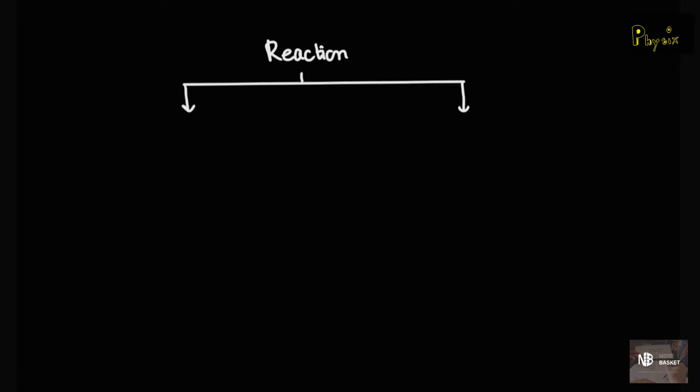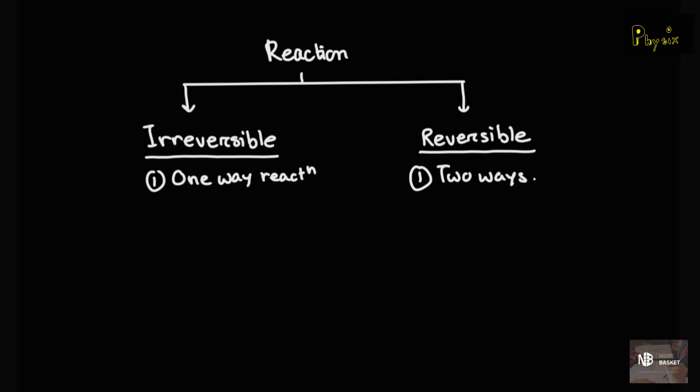We know reactions are of two types, which is one, irreversible reaction and two, reversible reaction. What are the differences between reversible and irreversible reaction? Well, an irreversible reaction is only a one-way reaction. And a reversible reaction, it is not one-way, but it has two ways. And by definition, reversible reactions are incomplete and irreversible reactions are complete. And the idea of entropy is related to this irreversible type of reactions.